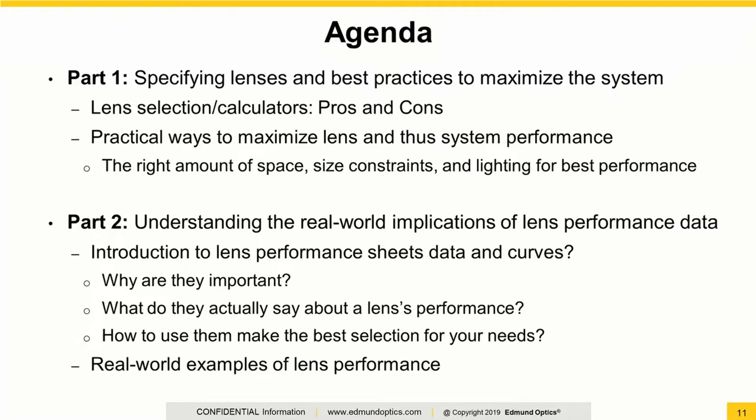We're going to start off by looking at how we actually go through and do simplified capabilities for selecting lenses — usually like a lens calculator or some formulas that you can use. Then we're going to look at, once a lens is chosen, the best ways and the most practical ways to maximize that performance. Because even if you get the right product to go with your camera and that's going to fit the application overall, there are many things you can do to actually get things to work correctly. In part two, we're going to understand the real-world implications of lens performance, lens performance curves, the data that goes with it, and look at real-world examples of tying lens performance on data sheets with actual images showing how well that performance connects together.